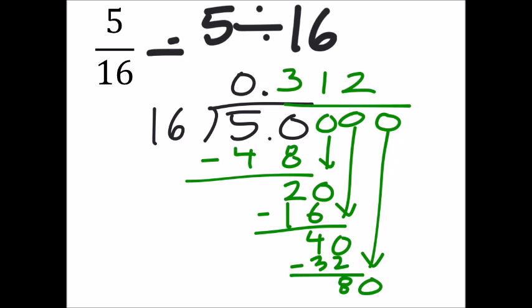How many times does 16 go into 80? 5? That sounds great. And 5 times 16 is 80, which means I have 0 remaining. And that would be my answer right there.